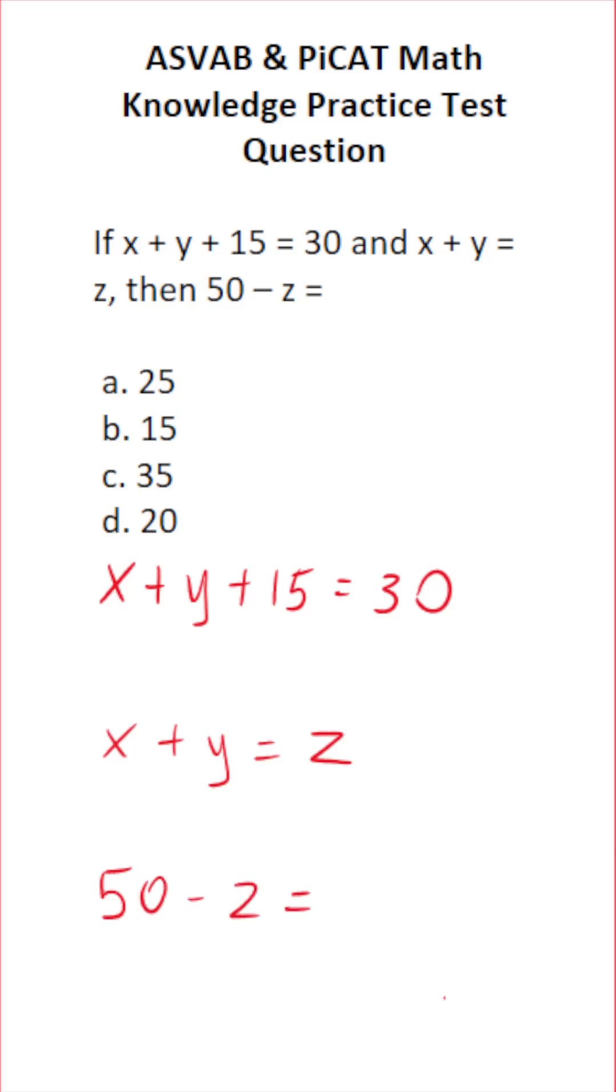So clearly we have to find out what z is. The easiest way to do that is to start with the first equation. Specifically, we're going to solve it for x and y by subtracting 15 from both sides. In doing so, this crosses out here, leaving you x plus y on this side. 30 minus 15 is 15.